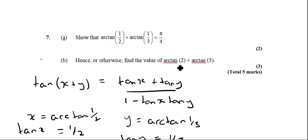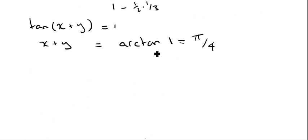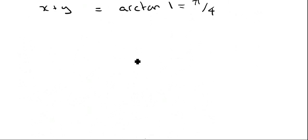The next bit says hence or otherwise, find the value of arctan(2) plus arctan(3). This is important, hence or otherwise. I think in this particular case, it's easier to just use the or otherwise. We don't need to use that previous result. So let's just do exactly the same as before.